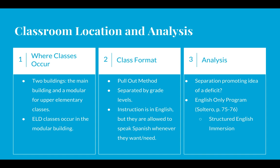The classroom location is in a separate building from the main school building. The modular building that this classroom is in holds the upper elementary classes. I believe the reason for this is because there are so many classes for each grade and so many rooms in use that it was a matter of available space. Even in the last year, the room has changed location from the main building to the modular building, so I think it's more that this is what space is available, so they moved the classroom here.